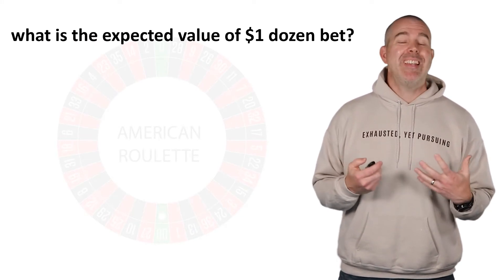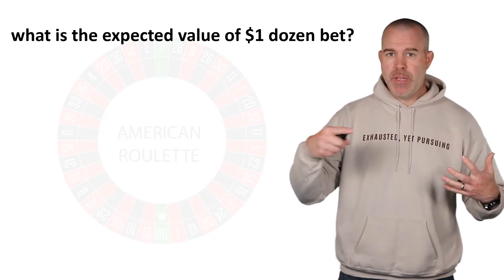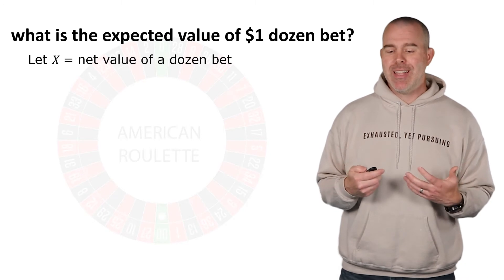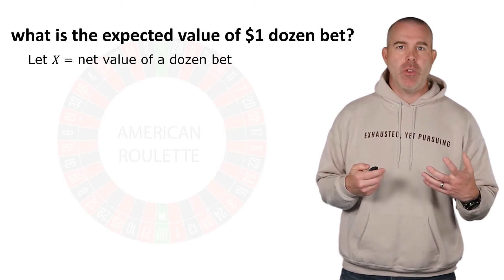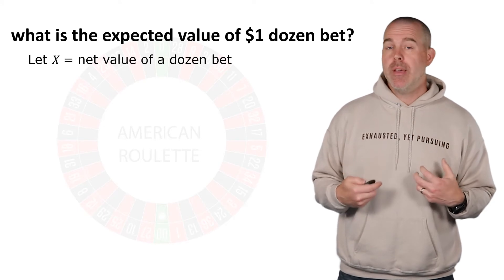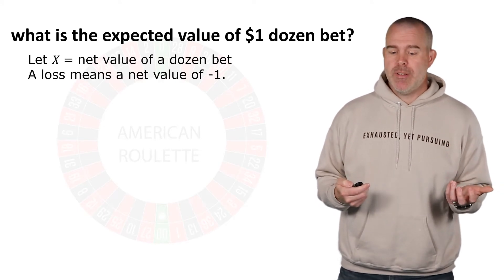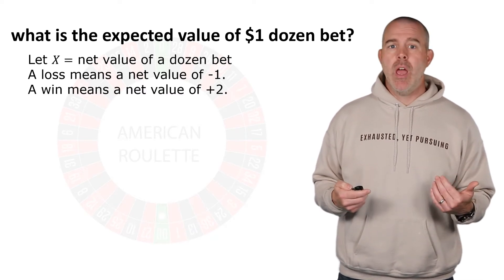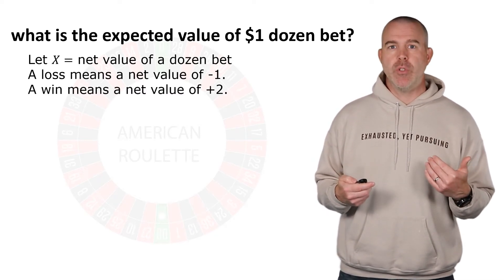Well, we need to quantify this probability experiment of the ball rolling around. So let's say x, let's let x be the net value, like our profit, our actual net value that we would take away. There's two possibilities then. A loss would be a net value of negative one, and then a win would be a net value of positive two.